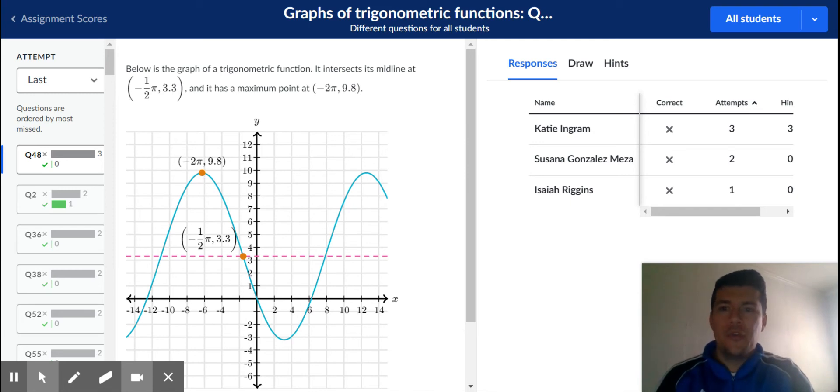So if we go from negative 2 pi to negative 1 half pi, that's a difference of 3 pi over 2. You can think of the unit circle, or you can use subtraction.